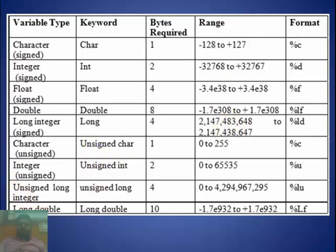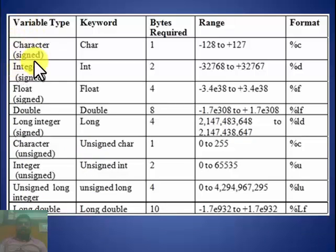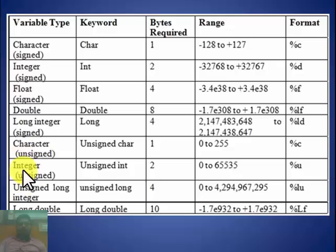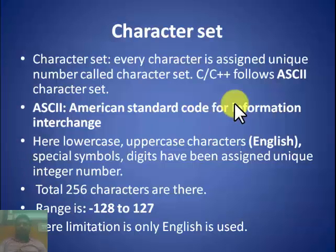The main inbuilt data types are char, int, float, and double. We will discuss long, unsigned, and other modifiers later.